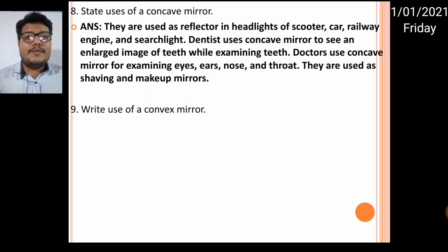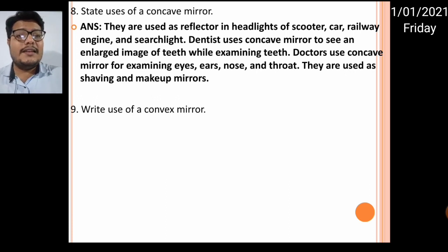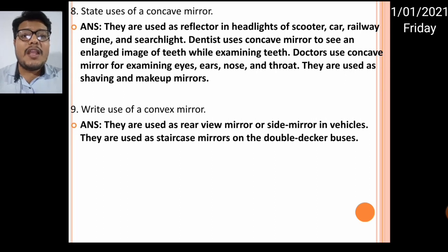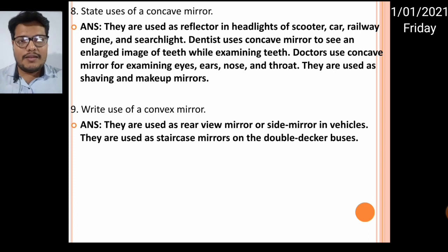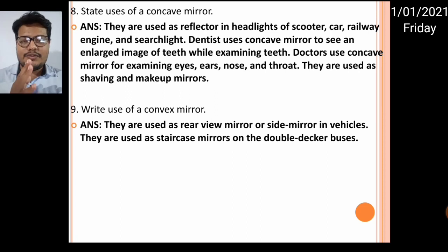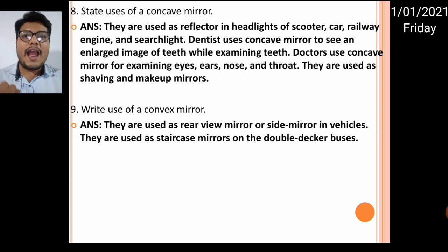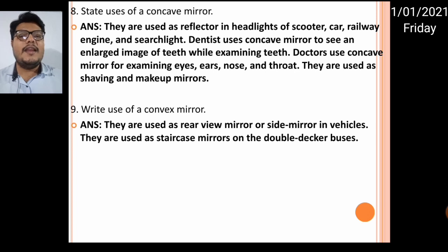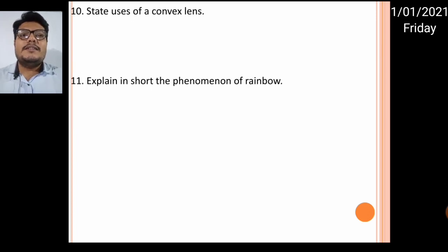State the uses of a convex mirror. Convex mirrors are used as rear-view mirrors — the side glass of vehicles like motorbikes or cars. They are also used as staircase mirrors in double-decker buses, where a person going up or down can see who is coming behind them.